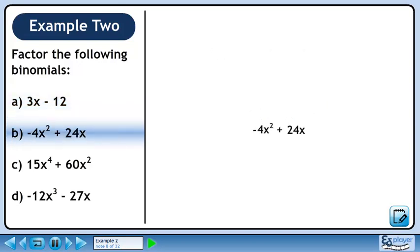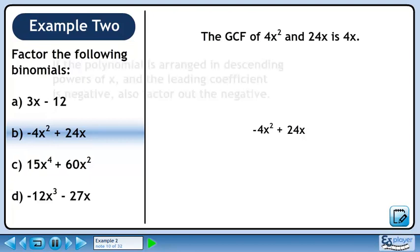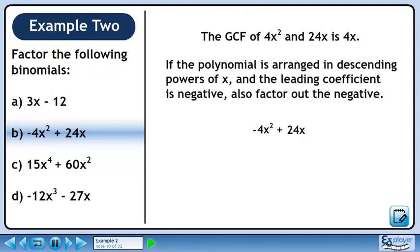In part b, we'll factor minus 4x squared plus 24x. The greatest common factor of 4x squared and 24x is 4x. If the polynomial is arranged in descending powers of x and the leading coefficient is negative, also factor out the negative.